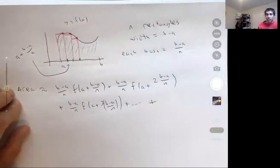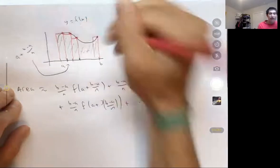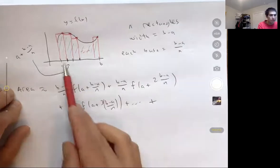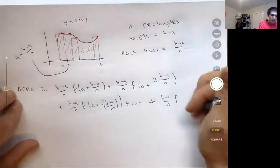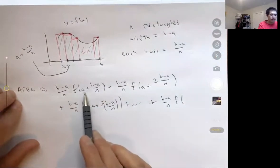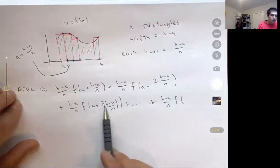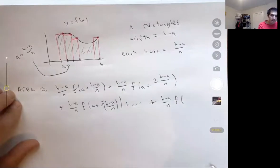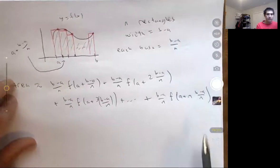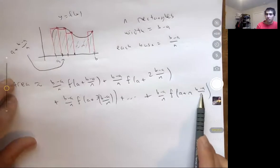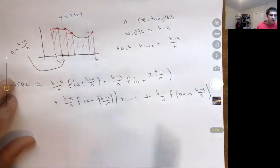I continue this for n terms using n rectangles. You can see the pattern: the first rectangle has x value a plus 1 times (b minus a over n), the second has a plus 2 times (b minus a over n), the third has a plus 3 times (b minus a over n). So the nth rectangle has height f of (a plus n times b minus a over n). The n's cancel, giving a plus b minus a, which is just f of b. Looking at the picture, that makes sense — I'm taking the y value at x equals b. So that checks out.